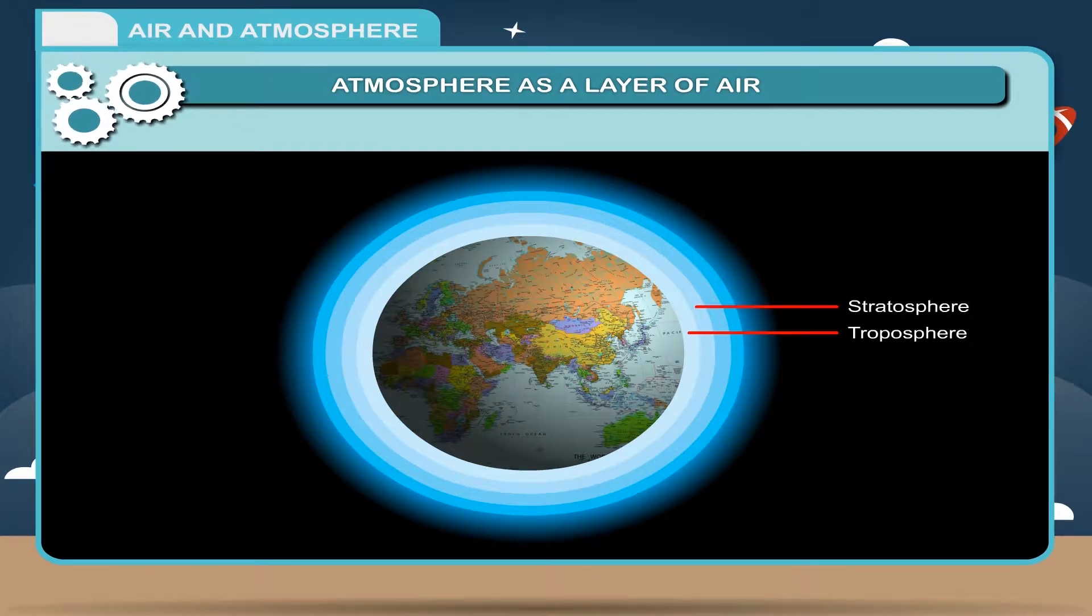Stratosphere. The layer next to the troposphere is called stratosphere. Mesosphere. The layer next to the stratosphere is called mesosphere.